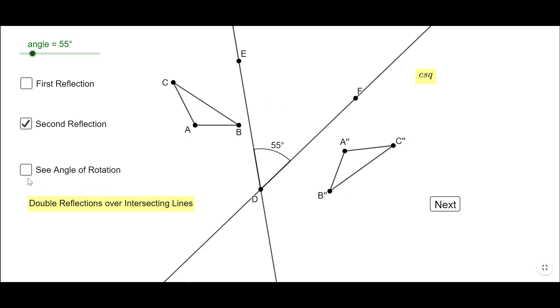If you notice, I said here that unique transformation is a rotation. If I rotate triangle ABC, look at here, 110 degrees around this point D, I'm going to go on top of triangle A second, B second, C second. So this is the equivalent transformation for a double reflection over intersecting lines.